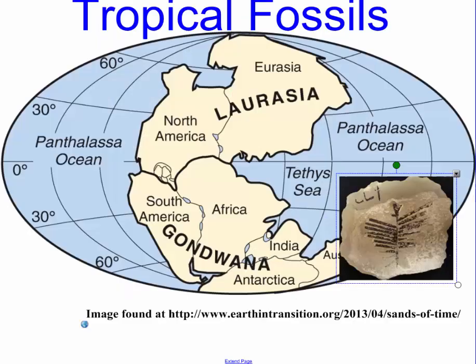They also found tropical fossils down in Antarctica, the South Pole. The South Pole is freezing cold, has no vegetation, and is covered in ice. How could there be tropical fossils there? The answer is that at some point during the drifting process, Antarctica was in a more tropical location where vegetation could grow.